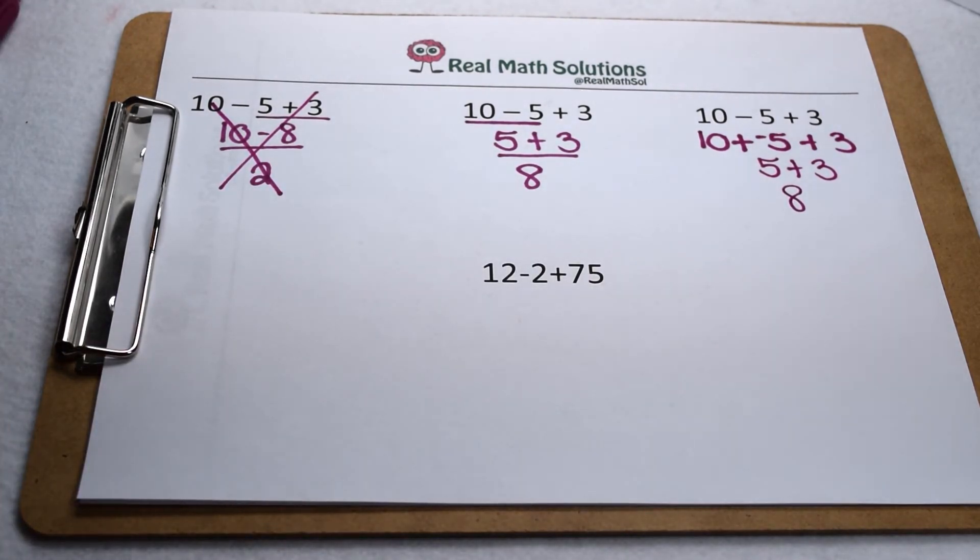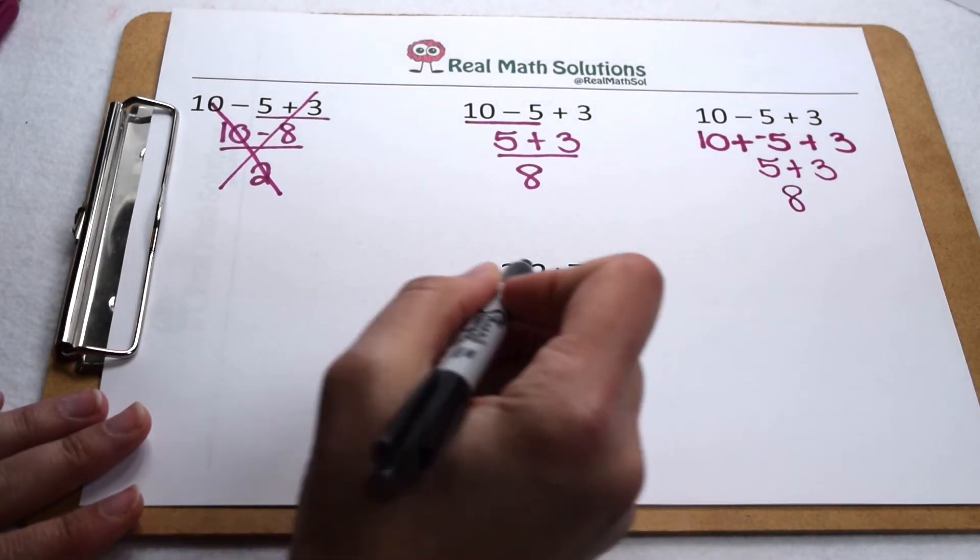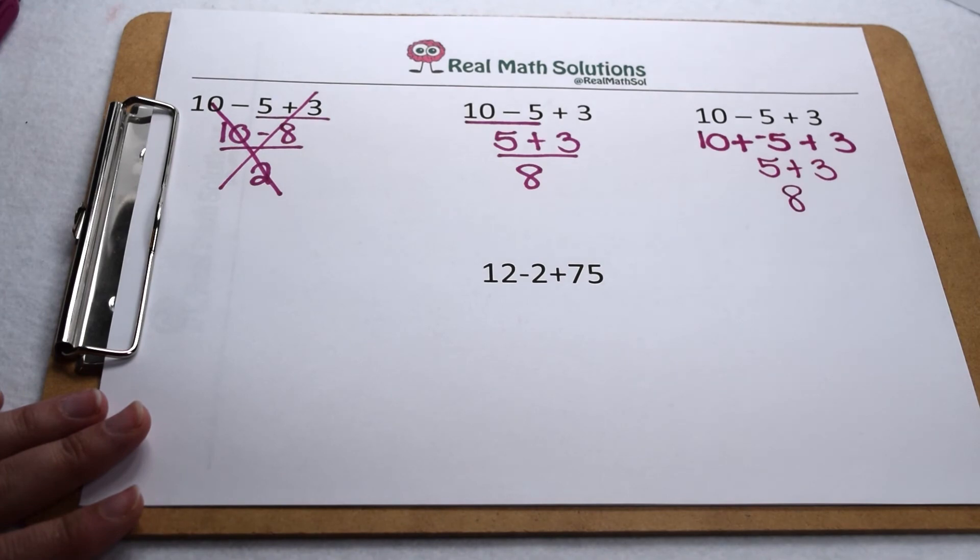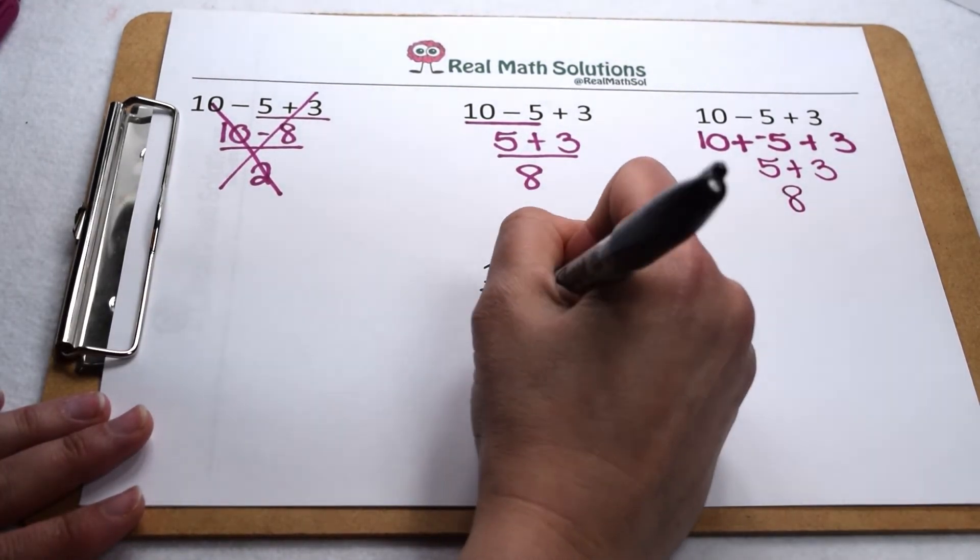Keeping that in mind, let's finish off our problem. Our last part is 12 minus 2 plus 75. We're going to work from left to right. First we have 12 minus 2. 12 minus 2 is 10,